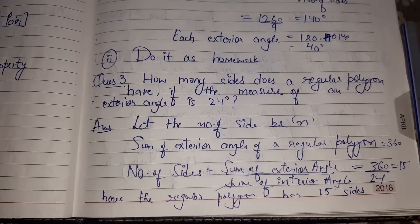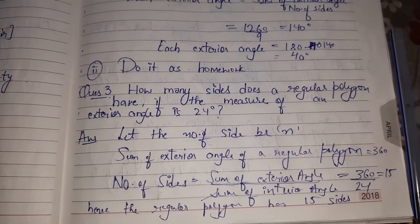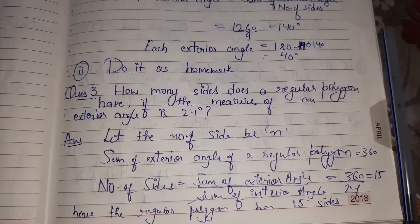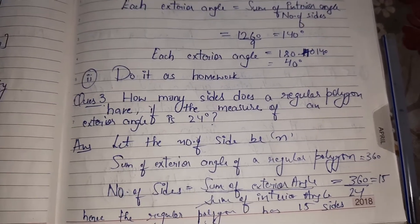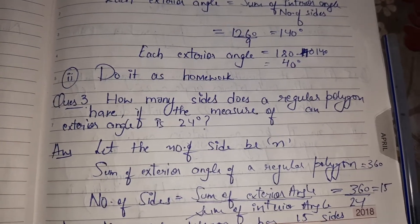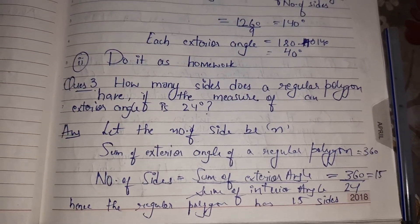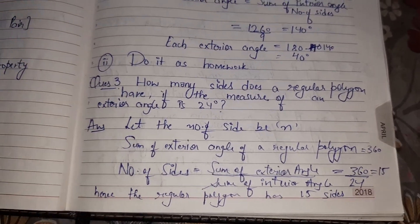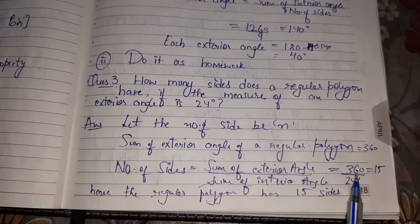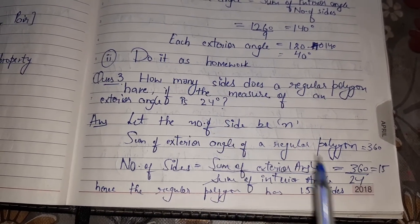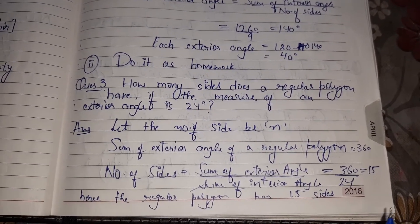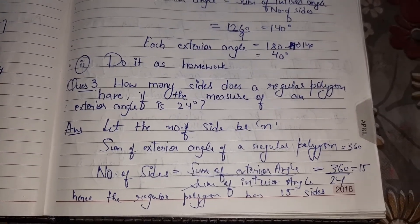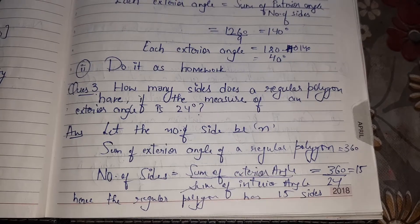In the earlier question they gave us the sides; now they have given us the angle. Let the number of sides be N. We know the sum of exterior angles of a regular polygon is 360. So the number of sides equals sum of exterior angles upon each exterior angle: 360 divided by 24 equals 15. Hence the regular polygon has 15 sides.